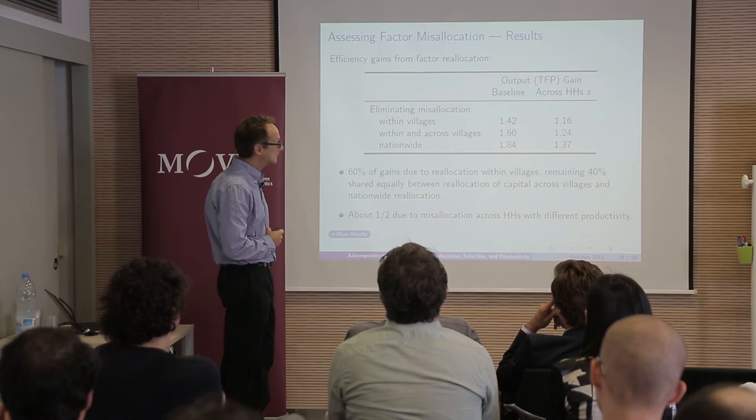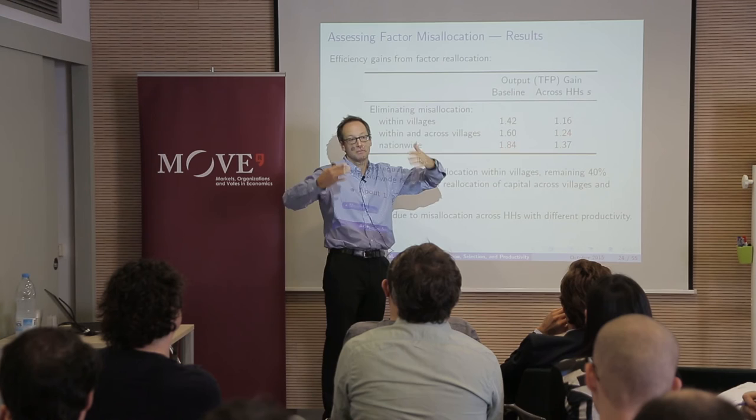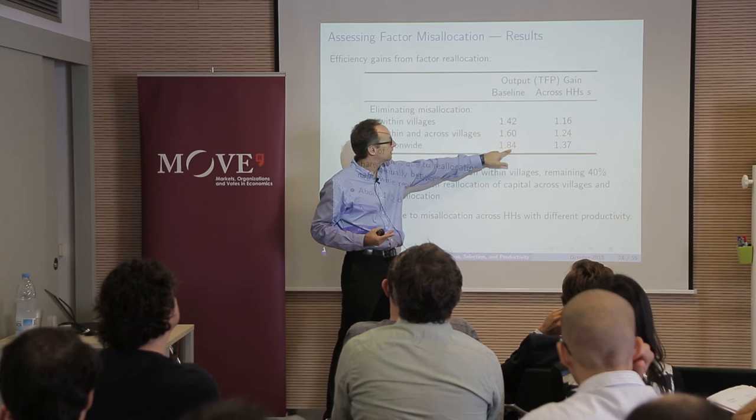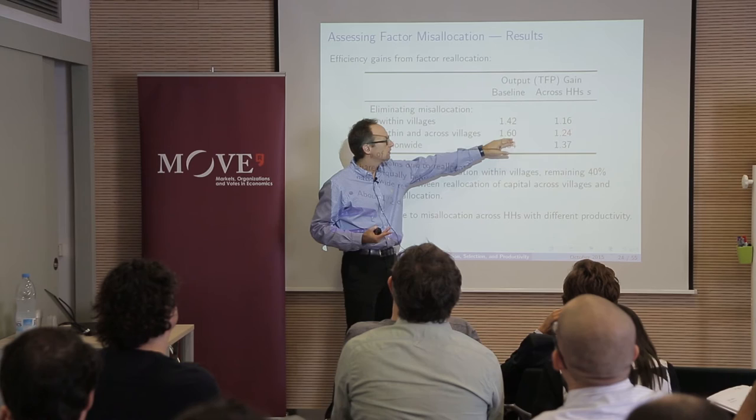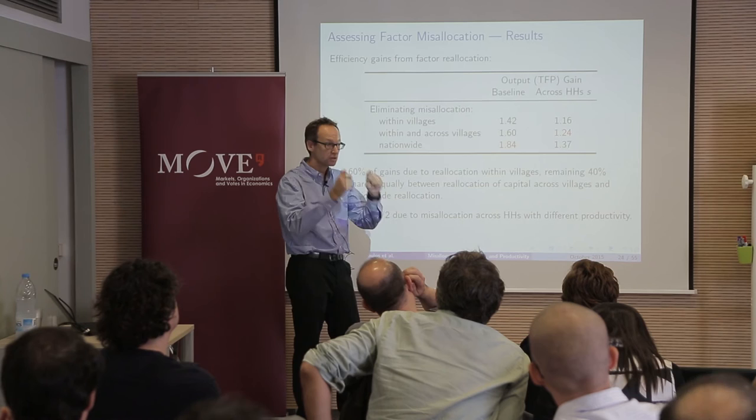The numbers we get across different levels: if you do nationwide reallocation of factors in the static sense, output and TFP go up by 84%. It is 60% if you only do within and across village reallocation. If you only do within-village reallocation, it's 42%. So the majority of the gains comes from reallocation that occurs even within narrowly defined villages.